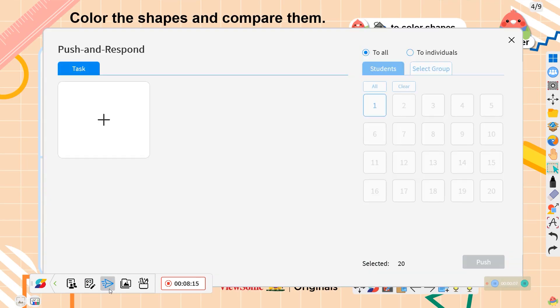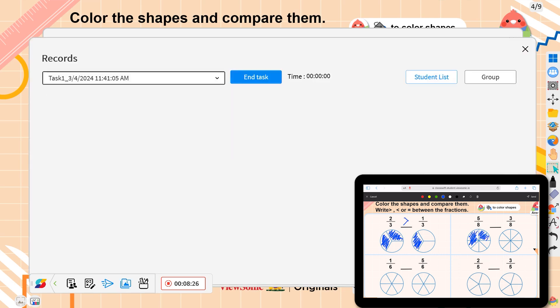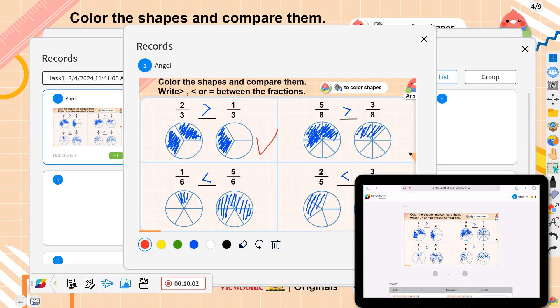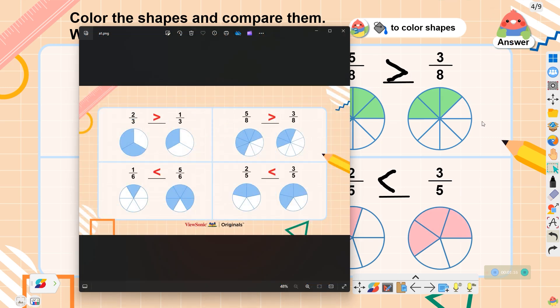Compare fractions using shapes. Students can draw their answers using the push and response function on ClassWhip. Teachers can use the color fill tool on the digital whiteboard to demonstrate the answer. There is also a suggested answer on the top right corner.